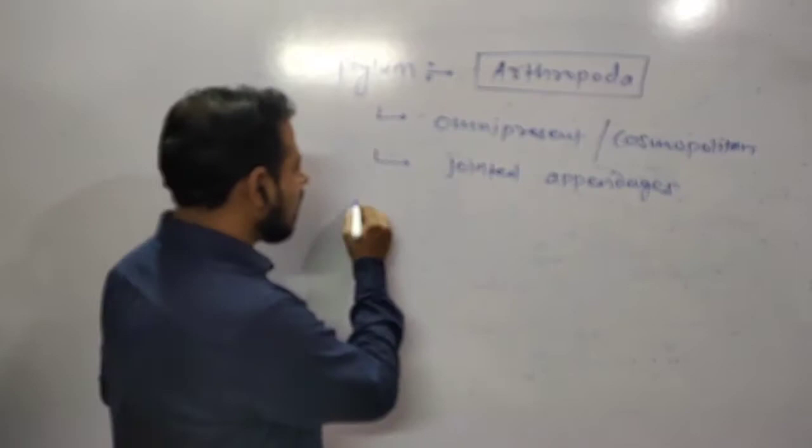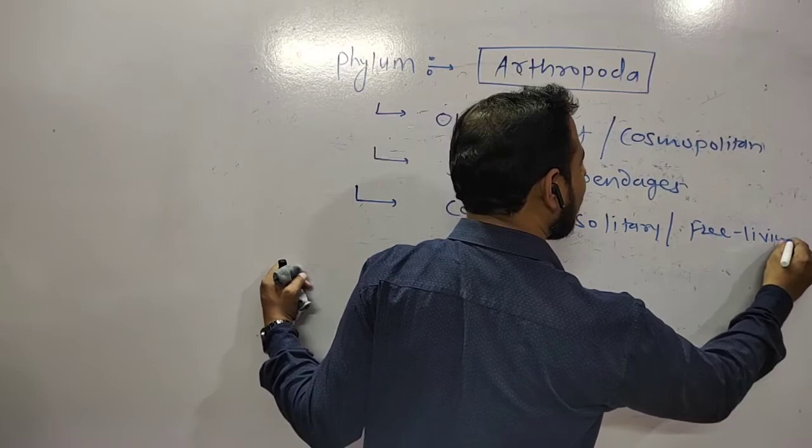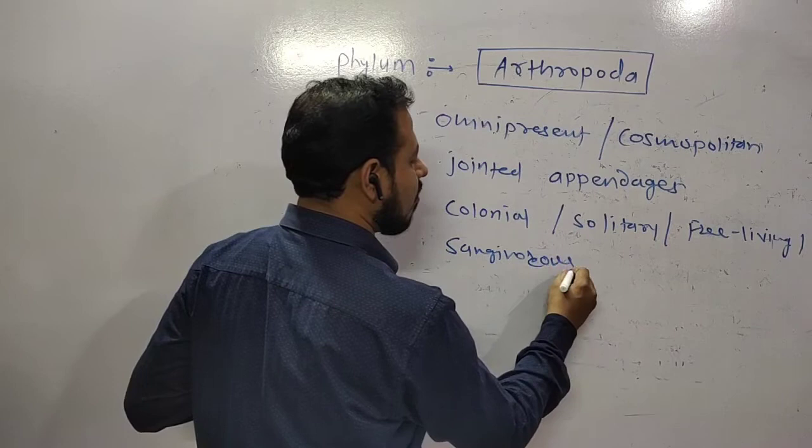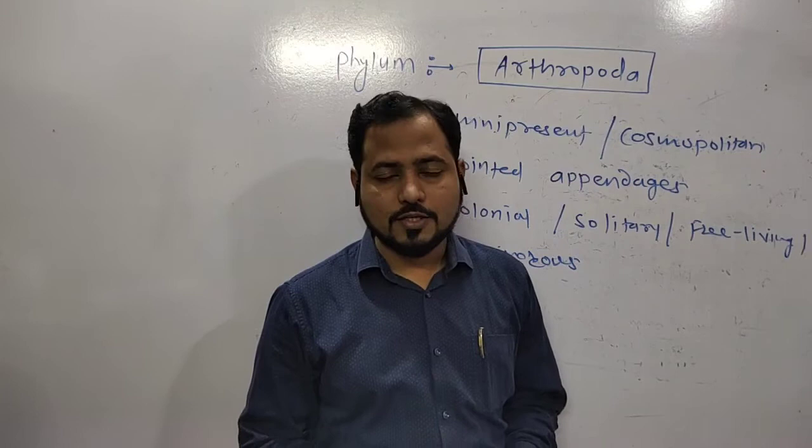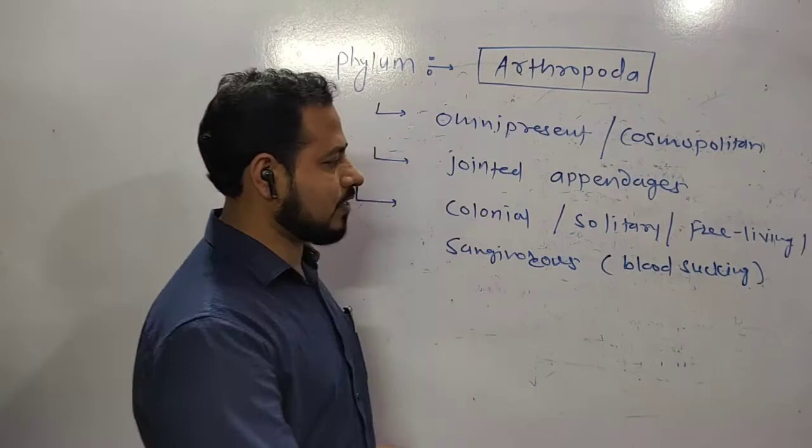If you see these animals, they are colonial or solitary. These animals can be free-living and some animals are sanguivorous. Sanguivorous is a kind of parasitism - blood sucking animals we can say, like female mosquitoes, bed bugs. They can suck blood from their host and we are one of their hosts. So a lot of variation and variety you will see in these forms, in arthropods.